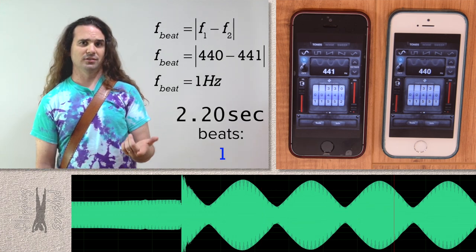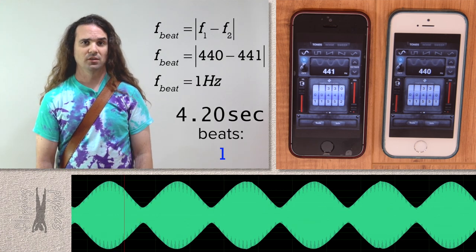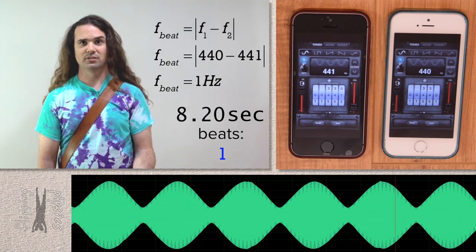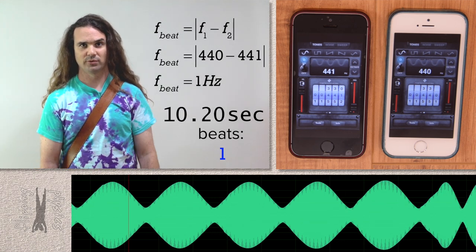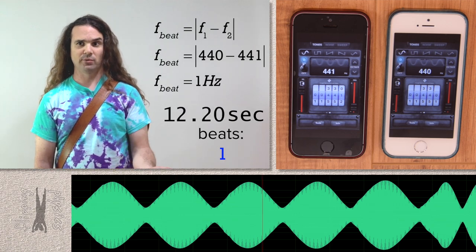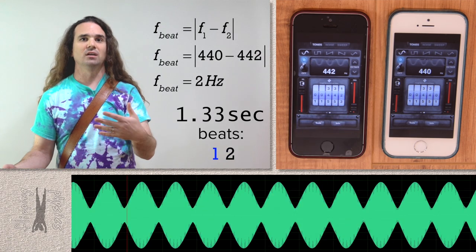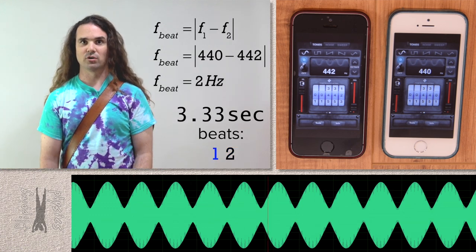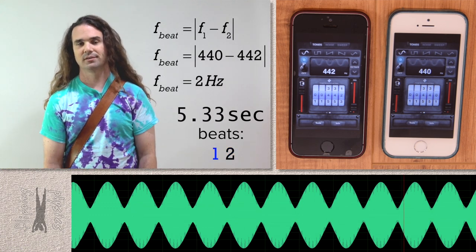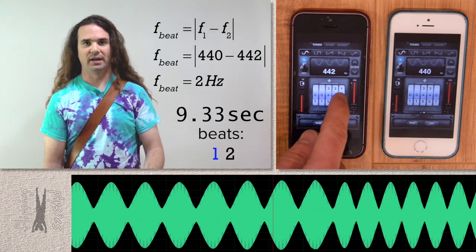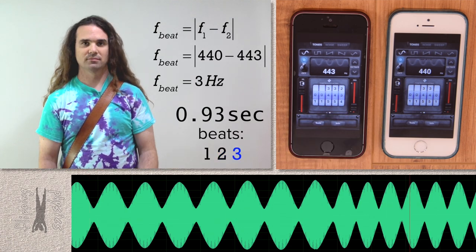What you hear is called the beat frequency. The equation for the beat frequency is the absolute value of the difference between the two frequencies, which is why this beat frequency is 1 hertz or 1 cycle every second. And this beat frequency is 2 hertz or 2 cycles every second, and then 3 hertz and so on.